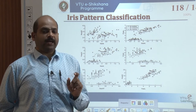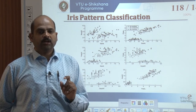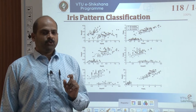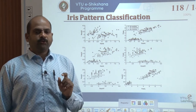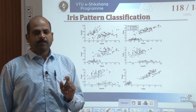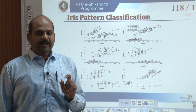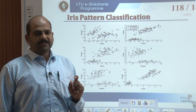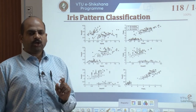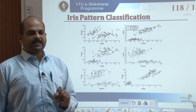The three species are: iris setosa, iris versicolor, and iris virginica. The four feature measures are the petal length, petal width, sepal length, and sepal width. There are 50 patterns for each of these three classes.